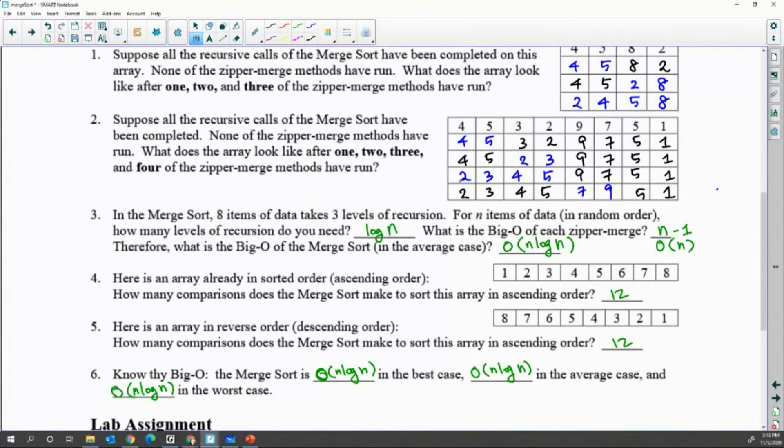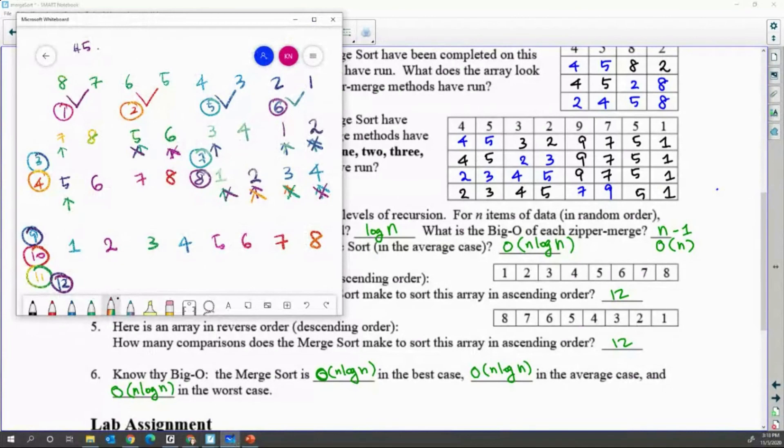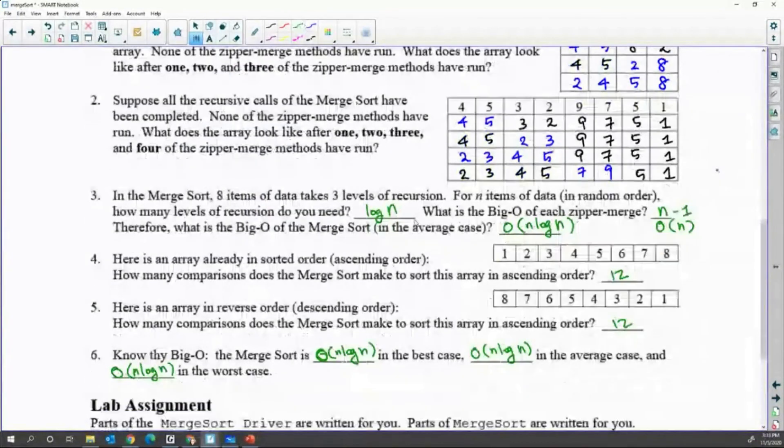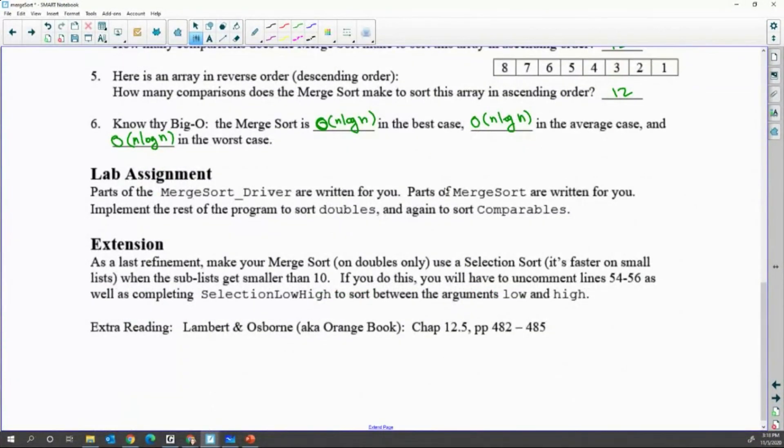If you trace the ascending order, you are going to see another 12 comparison happens. Now you are going to look at the lab assignment. You are going to make merge sort for doubles and for comparables. Comparable type, like objects.